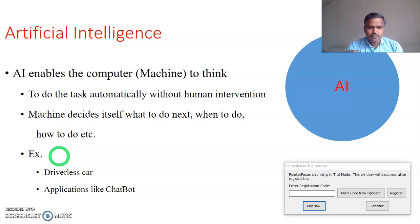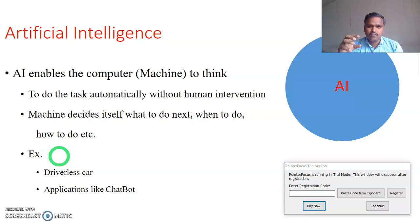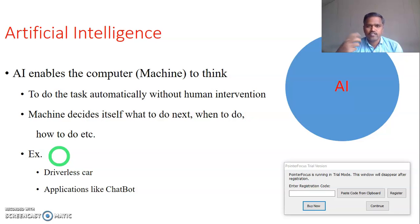Another example is the chatbot. A chatbot interacts with the user, or it may be one-way. Whatever information the user is seeking, the chatbot presents it to the user.